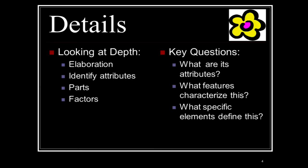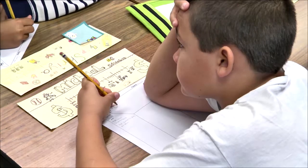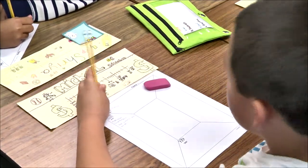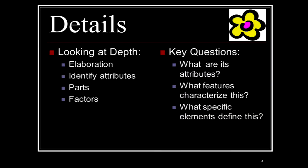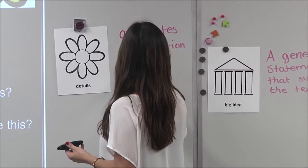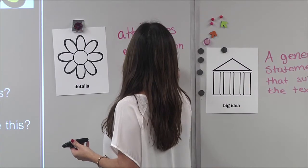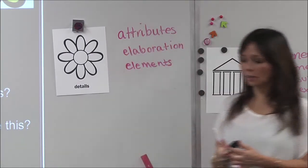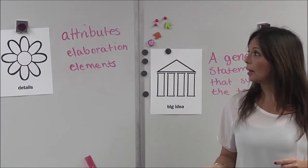So who can tell me what keywords are going to help us remember details? Attributes. Is there anything else? Elaboration. Elements of the story. Now we have details — let's move on to our next one.